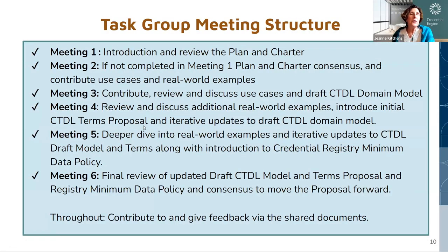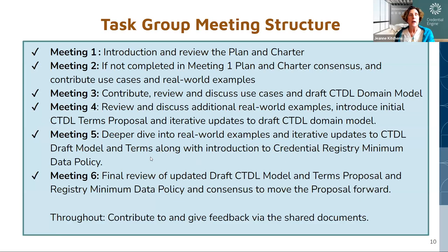This listing gives you an idea of how we structure the six meetings for a task group. There is a lot of iteration. We allow enough time — two weeks between meetings — where the CTDL team is working behind the scenes on solutions for the use cases and the real-world examples, iterating back to the task group to get feedback, and improving throughout the process.